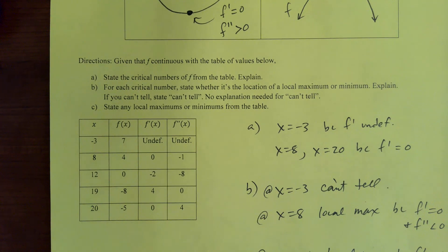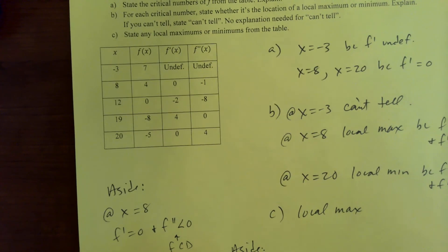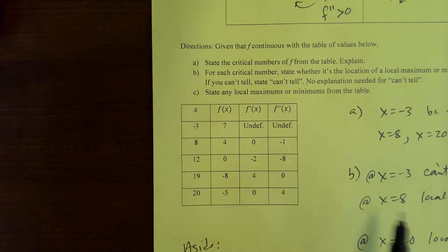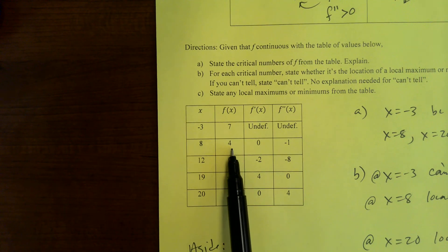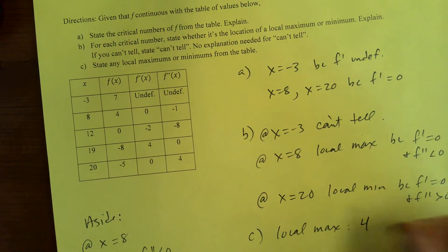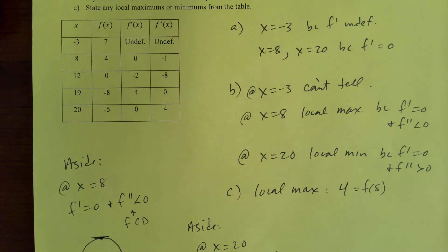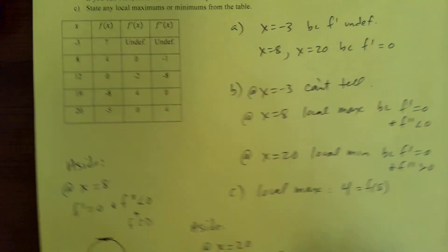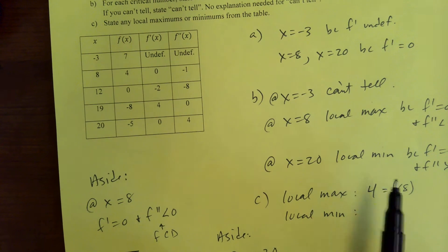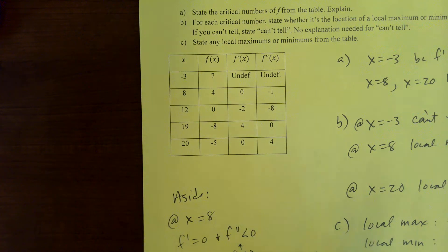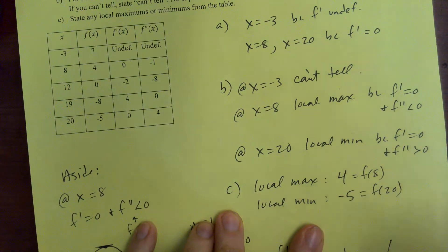For part C, they're asking to state any local maxes or mins from the table. They're not asking for the locations — they want the Y values. So at X equals eight we have a local max, and the Y value from the F column is four. So local max: four, at X equals eight, or F of eight equals four. And local min: the value is negative five, happening at an input of 20.